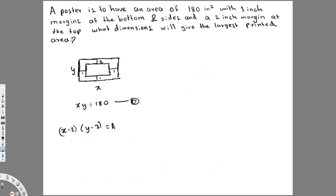To find the largest printed area, I need to find the absolute maximum. To do that, I first need to find critical numbers by setting the derivative equal to zero. Since we have two variables x and y, I'll substitute y = 180/x from the first equation into the area equation, giving A = (x − 2)(180/x − 3).